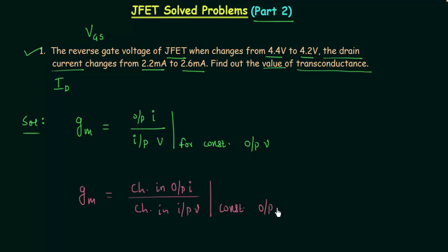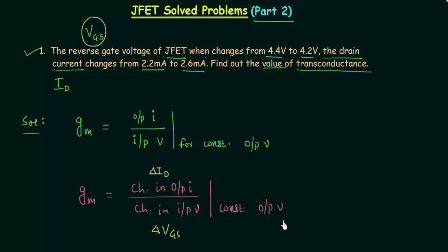The output current in the case of JFET is equal to ID, so the change in output current is represented by Delta ID. The input voltage is the controlling voltage in the JFET and is equal to Vgs, with the change represented by Delta Vgs. The output voltage is VDS, and it must remain constant.